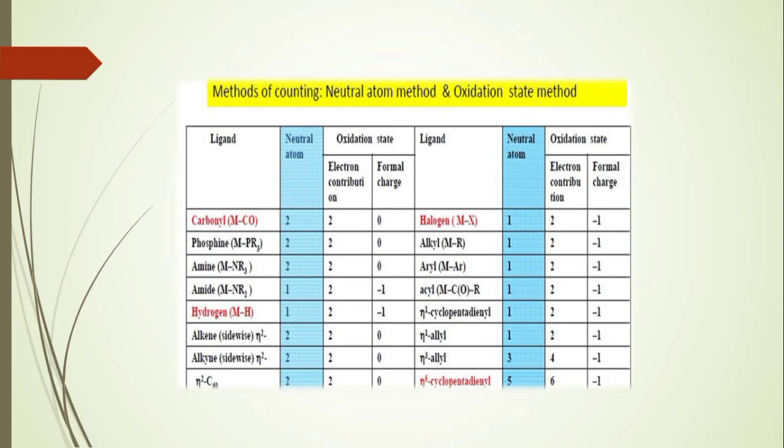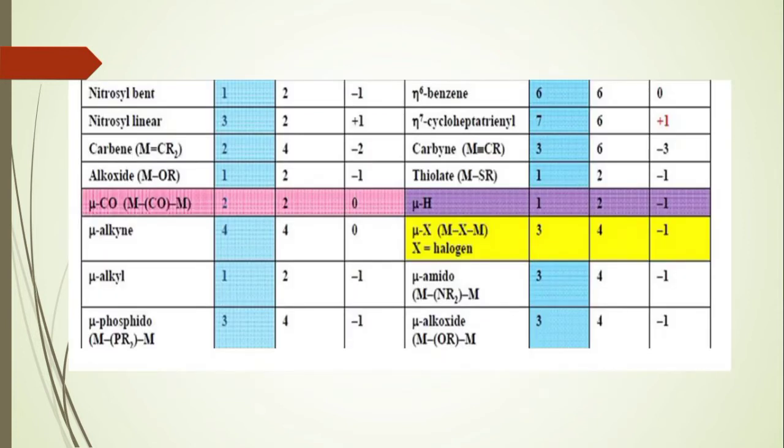The nitrosyl ligand: if it is a bent nitrosyl, it donates 1 electron; if it is a linear nitrosyl, it donates 3 electrons. The η⁶-benzene ligand donates 6 electrons in both the neutral atom method and the oxidation state method, and it has a formal charge of zero.